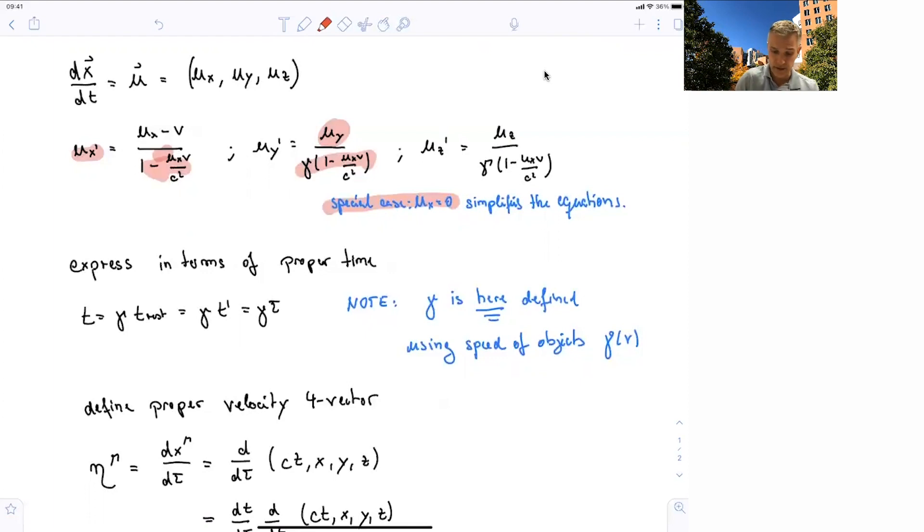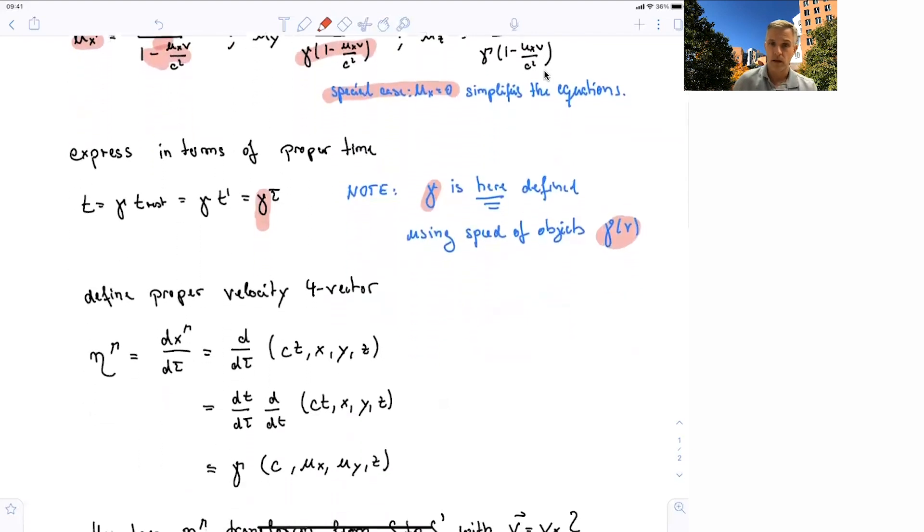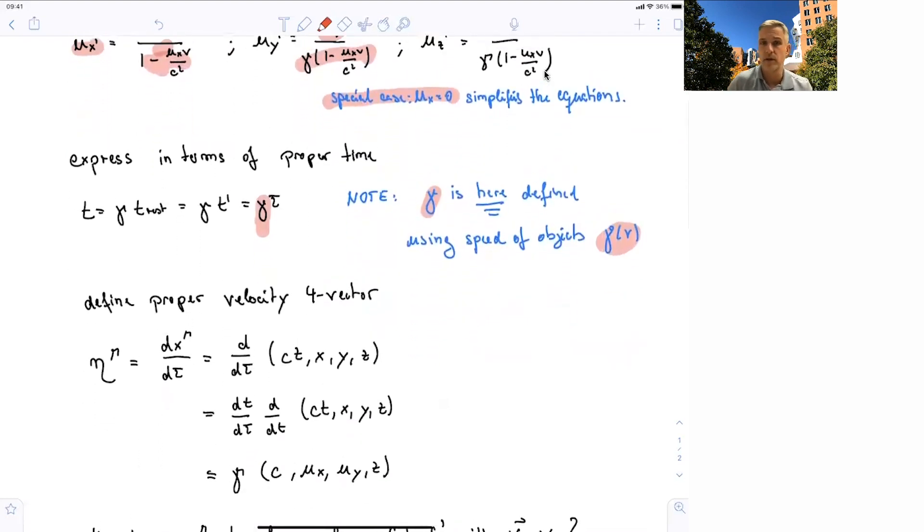One is a gamma factor of the Lorentz transformation. And this gamma here is a gamma using the speed of the object in a specific reference frame. So this is a gamma factor, which is a gamma of v of the velocity or the speed of the object. And now we can just simply define proper velocity.